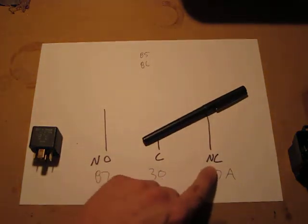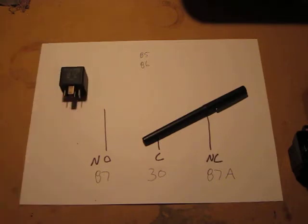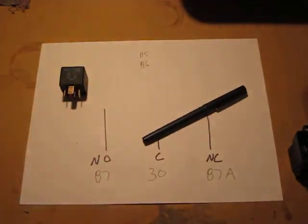So, NC, normally closed. When the relay is not energized, as it sits right here on the table, it is sitting in a normally closed state. This is its normal state, nothing's happening to it. So, these two contacts are connected, as the pen displays.